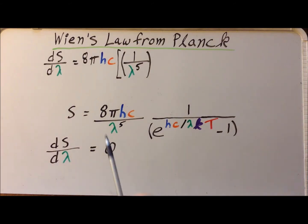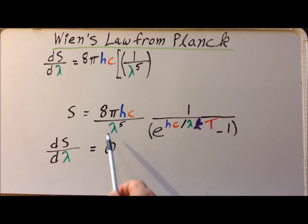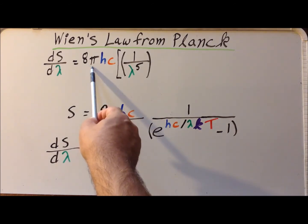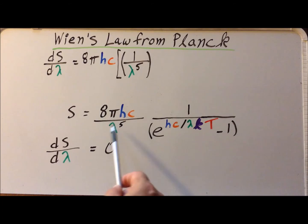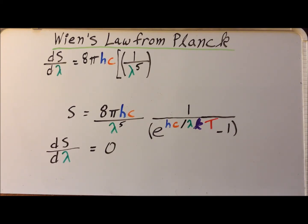We notice that we have this factor of 8 pi Hc, which does not involve lambda, so we can pull it out to the front. Then we have a one over lambda to the fifth and this complicated function, each of which involves lambda, so we have to apply the product rule for differentiation.